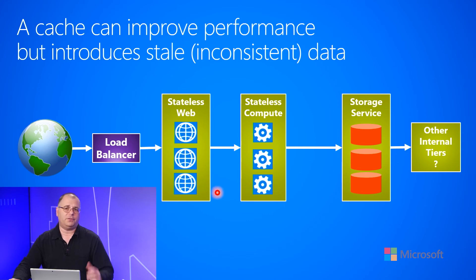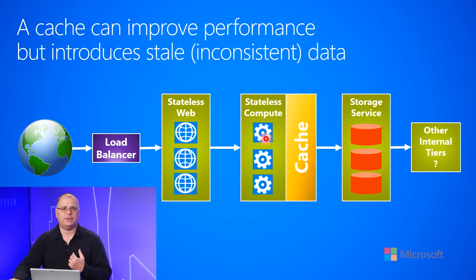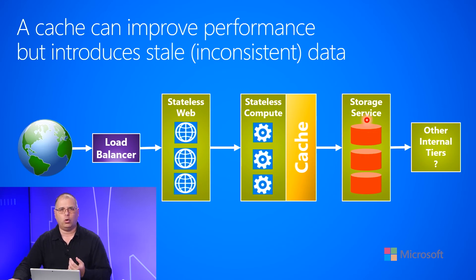A very common thing to do is to insert a cache mechanism on the stateless compute tier. When a request comes into the stateless compute tier, it goes and talks to the storage service to retrieve some data — this would be the warm data tier. That warm data comes back and we store that information in a cache.